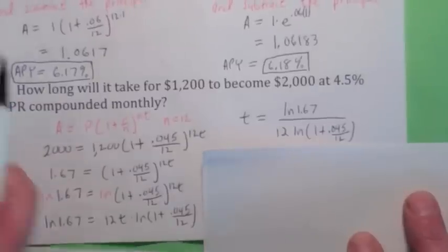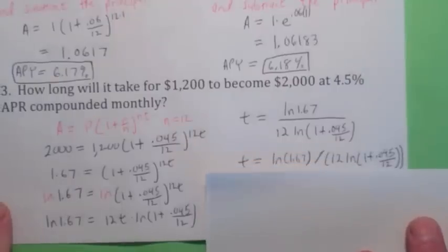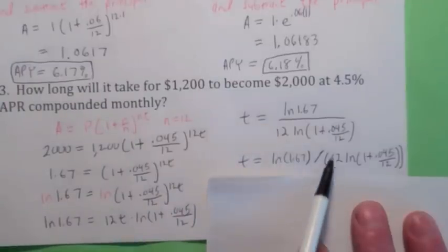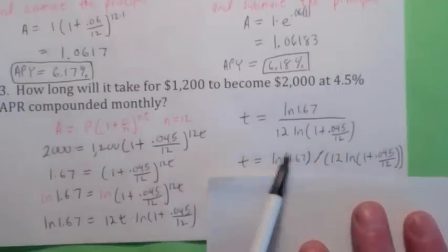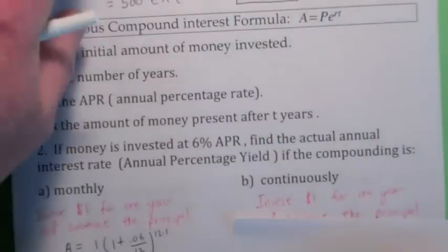T equals natural log 1.67 divided by 12 times the natural log of 1 plus .045 over 12. Now when you enter this in your calculator, again, be careful, especially of the denominator here. You have to have parentheses around the whole denominator, or else you're getting the wrong answer. That's a common mistake. So when you enter it like this, your answer should be 11.4 years. Okay, let's do a little bit more here. I think we've got time. Two more.